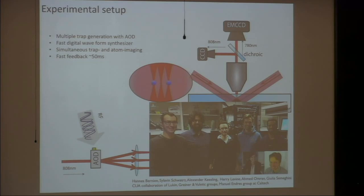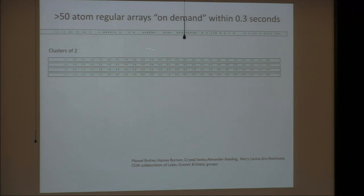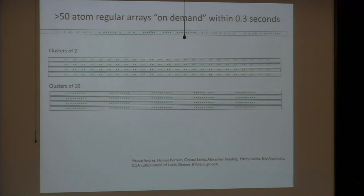Here are some examples of how we can prepare a regular array of about 50 atoms. We start with 100 traps and try to load them — there is a lot of entropy. Then we take a picture and rearrange. After rearrangement, the system is much more ordered. We can also create specific patterns, for example, clusters of two or clusters of ten. These are all single-shot atom images. Here is one atom missing, but it's the only one — so it results in very high fidelity preparation. Of course, we can also vary the geometry with each repetition.